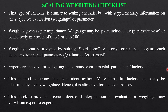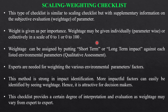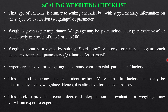The weighting checklist is the last type and is similar to the scaling checklist, but with supplementary information on subjective evaluation and weightage of parameters. Weight is given as per importance and may be assigned individually, parameter-wise, or collectively on a scale of 0 to 1 or 0 to 100. Weightage can also be assigned qualitatively using labels such as short term or long term. Experts are needed for weighting the various environmental factors.